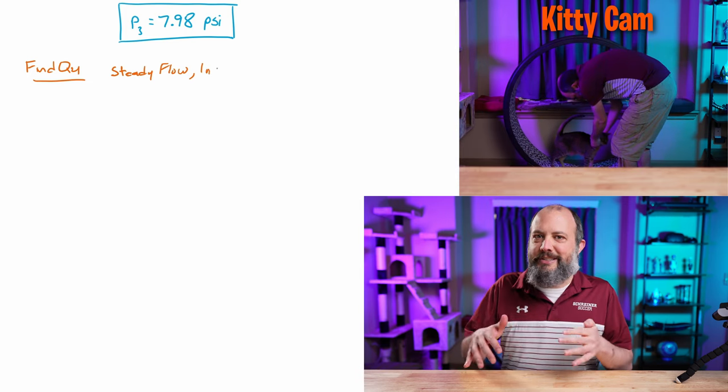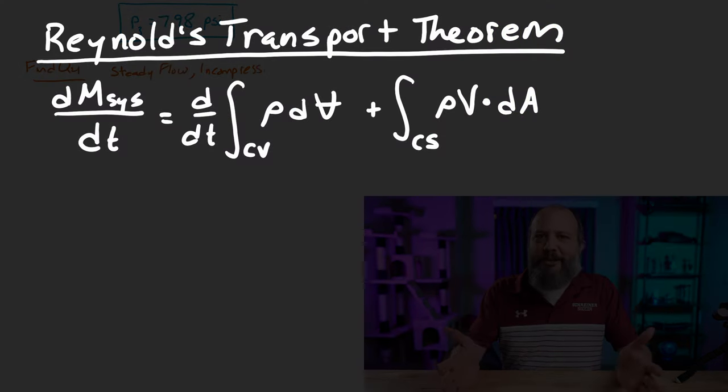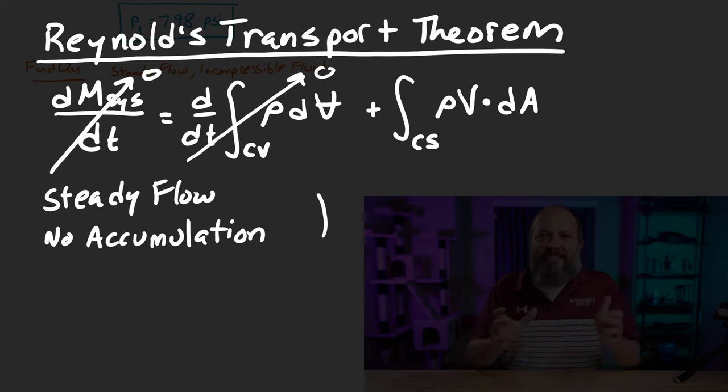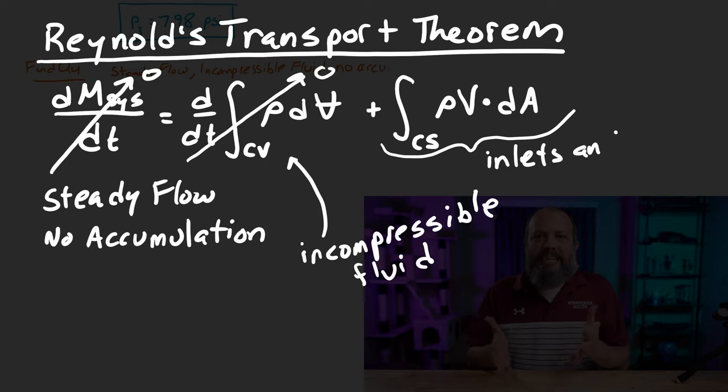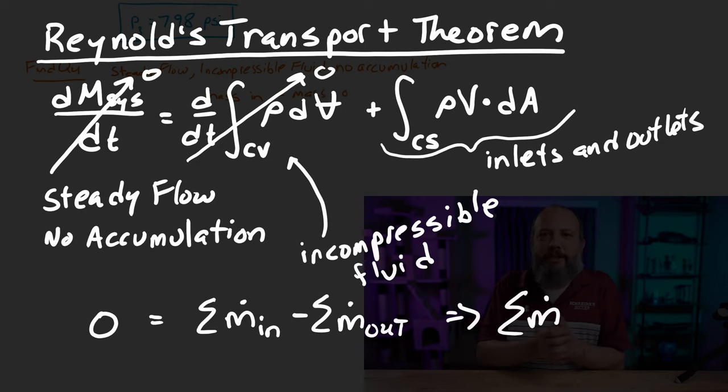The fluid mechanics continuity equation is related to the energy equation through the Reynolds transport theorem. Most of it does not apply in this case. Since we have steady flow of an incompressible fluid, there's no accumulation happening. That is, the amount of water that's in the control volume of the center of this pipe is not changing. So the Reynolds transport theorem simplifies down to the amount of mass that crosses into the system has to equal the amount of mass leaving the system.